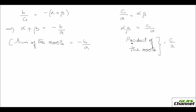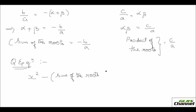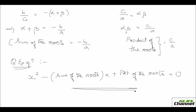Using this sum and product, we can also frame the quadratic equation. The quadratic equation can be written as: x squared minus (sum of the roots) times x plus (product of the roots) equals 0. So if you know the equation you can find the roots, and if you know the roots you can also find the equation. We will be doing some problems based on this in the coming videos. See you.